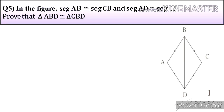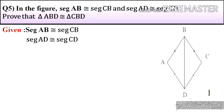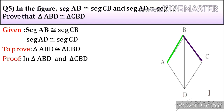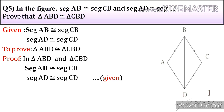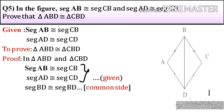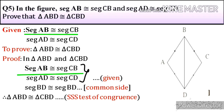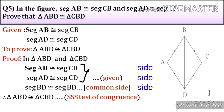Question number 5: In the figure, segment AB is congruent to segment CB and segment AD is congruent to segment CD. We have to prove triangle ABD is congruent to triangle CBD. Proof: In triangle ABD and triangle CBD, segment AB is congruent to segment CB and segment AD is congruent to segment CD — that is given. Segment BD is congruent to segment BD, the common side of the triangle. Therefore, triangle ABD is congruent to triangle CBD by SSS test of congruence.